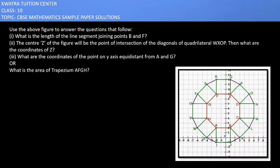So let's see what they are asking. We have to use the above figure to answer the question that follows. The first one says: what is the length of the segment joining B and F? So this is my point B, and this is F.